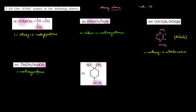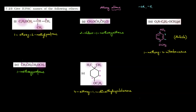Lekin agar neeche se karenge toh first position par ek hi aayega. Hum simple IUPAC rules follow karenge — numbering karenge is wale carbon se: first, second, third, fourth. Alphabetical order check karenge — ethoxy pehle aata hai. Fourth position par hai ethoxy group toh: 4-ethoxy-1,1-dimethyl kyunki 2 CH3 groups present hain. Aur yeh jo ring hai iska naam ho jaayega cyclohexane — so: 4-ethoxy-1,1-dimethylcyclohexane.